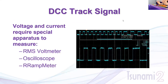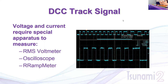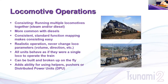Understanding the DCC signal is important because we can't see it — you need special tools to read it. A typical multimeter attached to the track in AC volts won't give an accurate representation of actual DCC track voltage. For that you need an RMS voltmeter (root mean squared), or an oscilloscope. Our friends at Tony's Train Exchange make a product called the Railroad Amp Meter, which can properly measure DCC voltage and current draw. Since we can't see the DCC signal, we have to understand how it's sent behind the scenes to have mastery of our decoders.